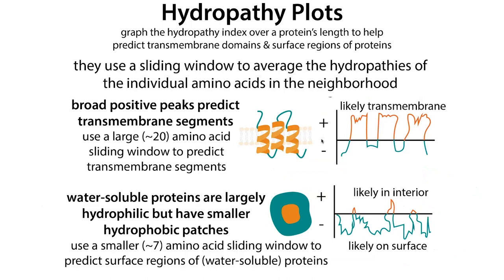For water-soluble proteins, you're likely not going to have any large, broad peaks - not those stretches with a lot of hydrophobic material. Instead, you're more likely to have smaller hydrophobic segments. Because we're looking for smaller features, we're going to use a smaller window size - typically five to seven amino acids in our sliding window. This allows us to predict the surface regions of water-soluble proteins as well as regions that are more interior.